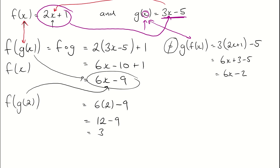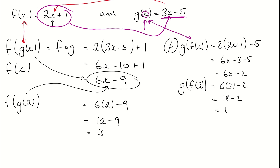If I wanted to work out what g of f of 3 was, I do 6 lots of 3 minus 2. So I get 18 minus 2, which is 16.